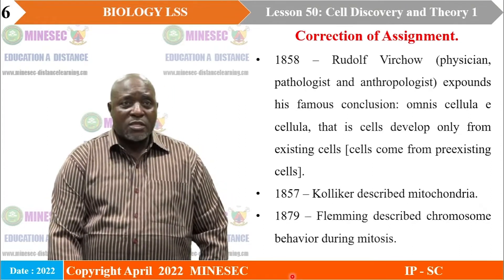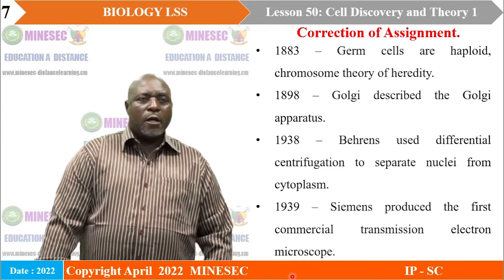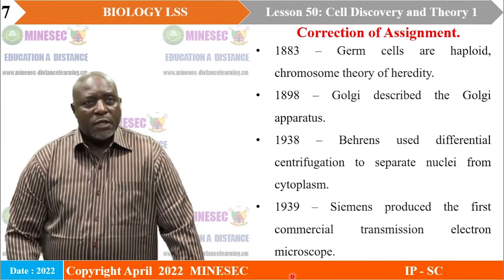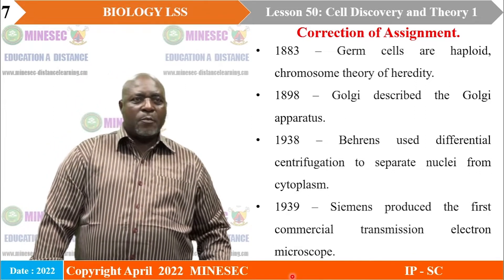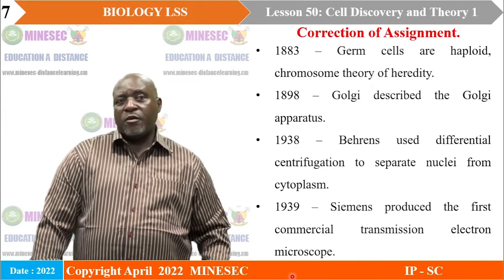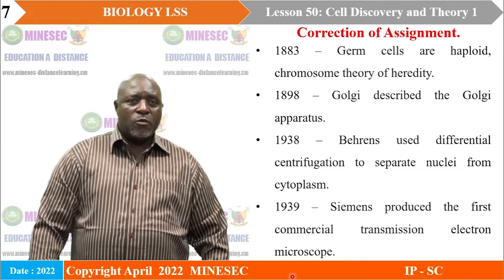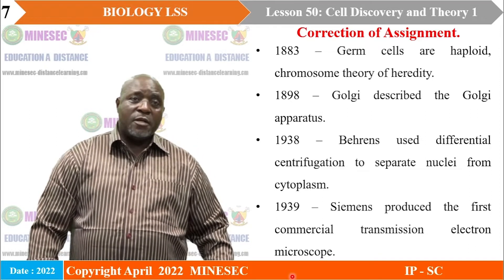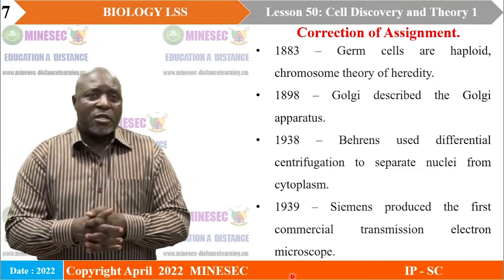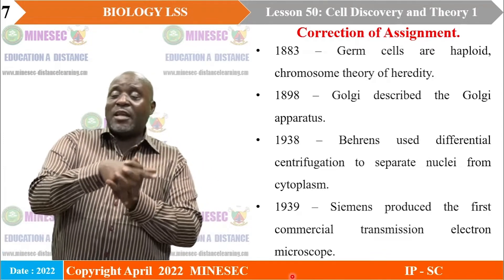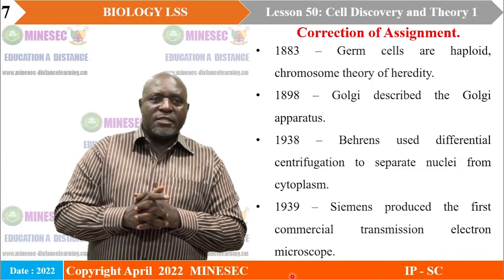In 1883, it was established that germ cells are haploid, and the chromosome theory of heredity was also elucidated. Then Golgi — we know about the Golgi bodies — described the Golgi apparatus, naming that apparatus after himself. We see that in all these several structures there is the Golgi apparatus. In 1938, Bensley used differential centrifugation, a very important method for studying the cell which we will study shortly.